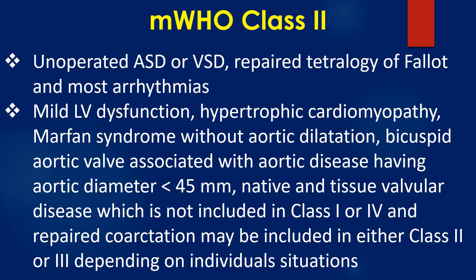Class 2 includes unoperated ASD and VSD, repaired Tetralogy of Fallot, most arrhythmias, mild left ventricular dysfunction, hypertrophic cardiomyopathy, Marfan syndrome without aortic dilatation, bicuspid aortic valve with aortic diameter less than 45 mm, native and tissue valvular disease not included in Class 1 or 4, and repaired coarctation may be included in either Class 2 or 3 depending on individual situations.